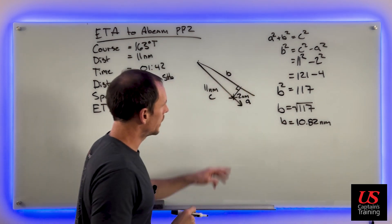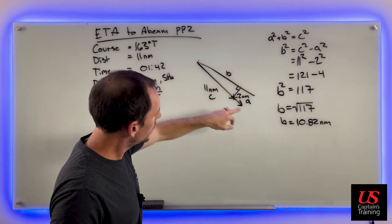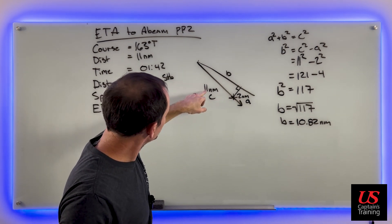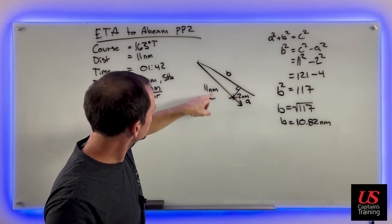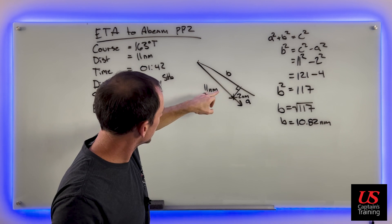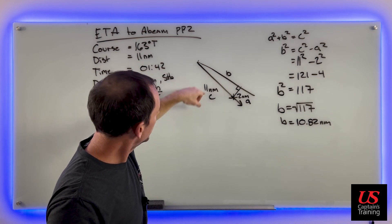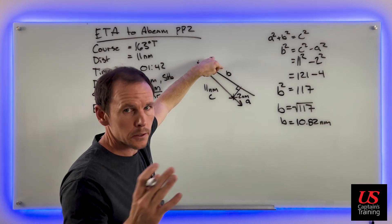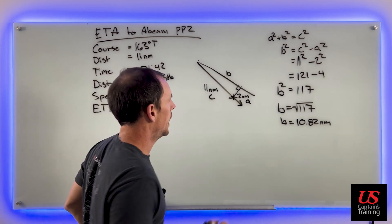We got 10.82, it rounds up to 10.82 nautical miles. b equals 10.82 nautical miles. We know that's right because it's going to be just a tiny bit shorter than c - this is the hypotenuse, right across from the 90 degree angle, and b is going to be just a little bit shorter than the hypotenuse. It has to be.